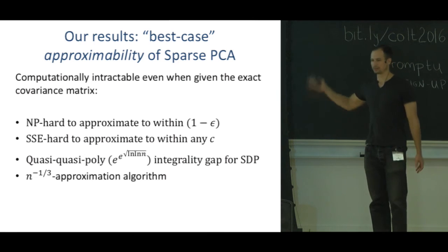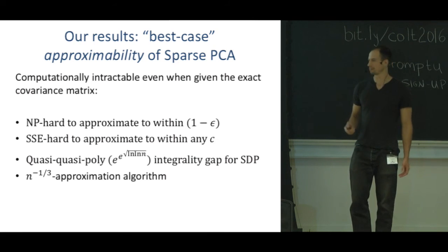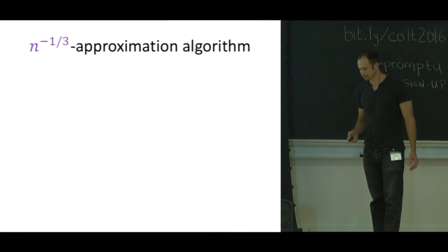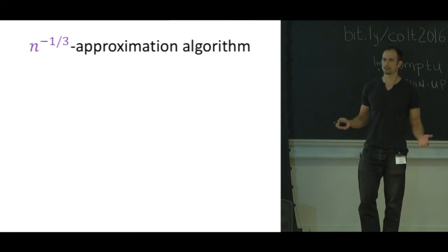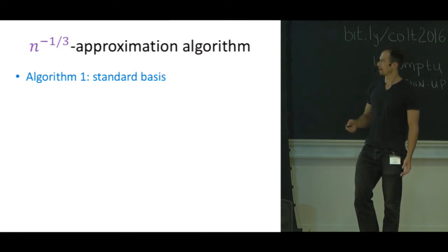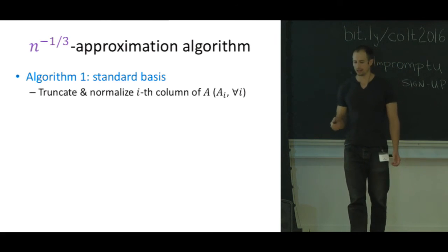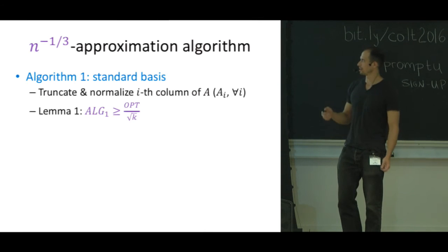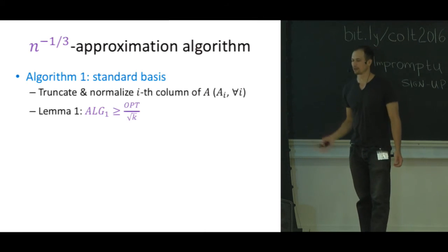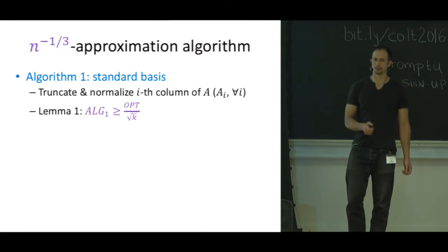To show you how simple all these things are, let me show you the algorithm. The n to the 1/3 algorithm is really just the best of two algorithms. Algorithm one is just look at the standard basis, pick your favorite vector in the standard basis. If you're faster at linear algebra than I am, you can see that this gives you an opt over square root of k approximation.